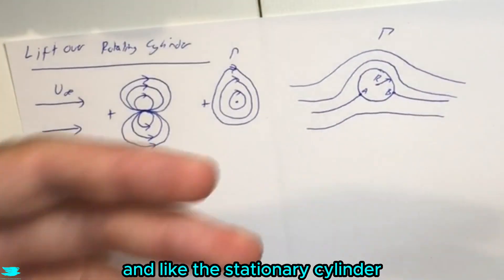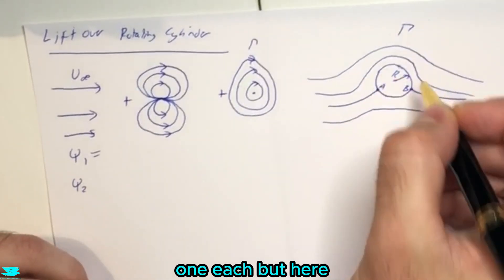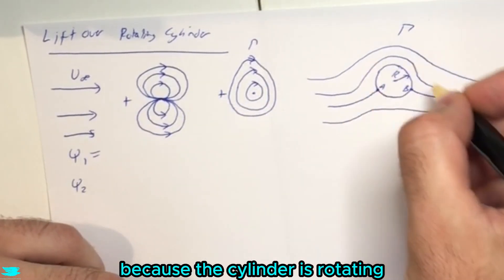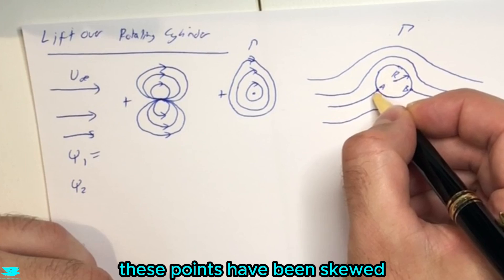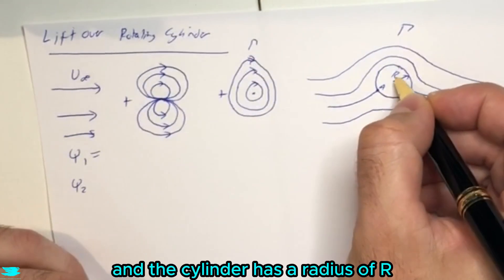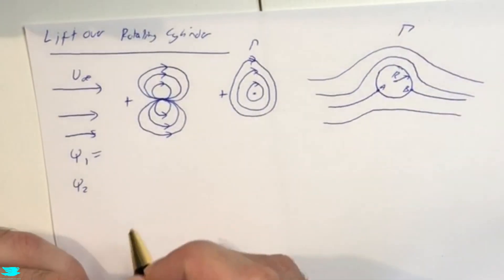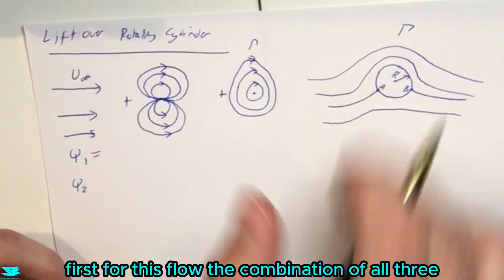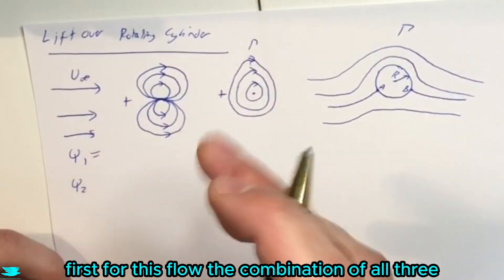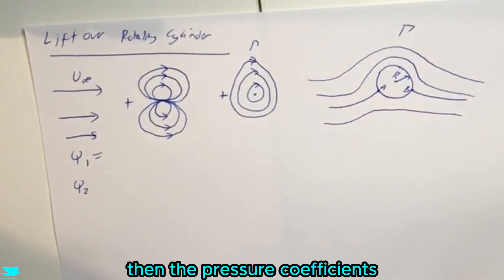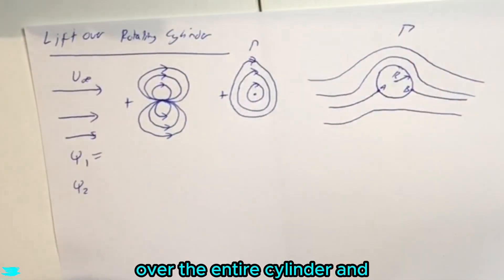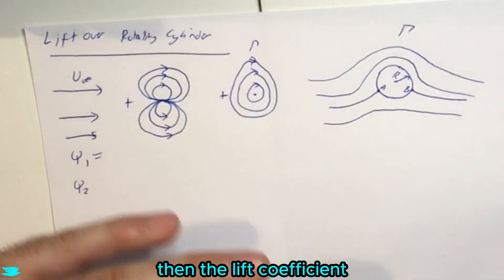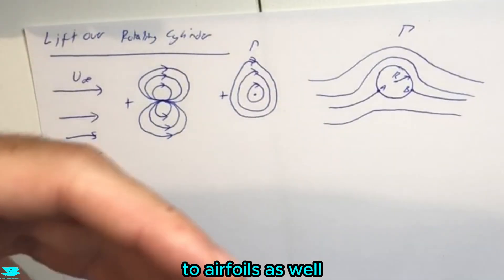And like the stationary cylinder, there are two points at the front and back, one each. But here, because the cylinder is rotating, these points have been skewed. And the cylinder has a radius of R. So let's go through and find the stream function first for this flow, the combination of all three, so that we can derive what the velocities are, then the pressure coefficient over the entire cylinder, and then the lift coefficient, and then how that applies to airfoils as well.